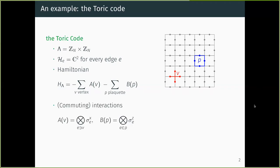For the star terms I take a tensor product of four sigma-x operations: X⊗X⊗X⊗X. For the plaquette terms it is sigma-z: Z⊗Z⊗Z⊗Z. You can check that the operators defined by stars and plaquettes commute with each other.